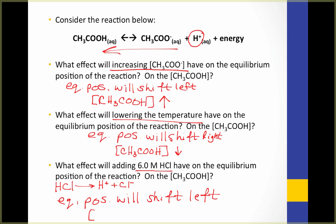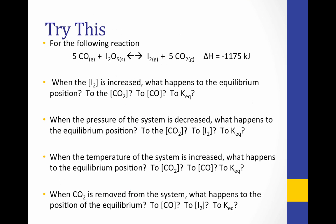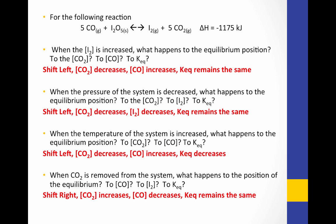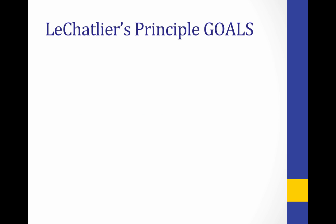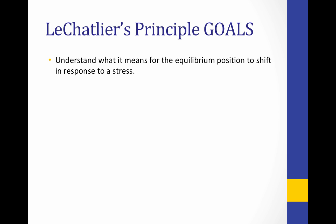Since the equilibrium position is shifting left, the concentration of CH₃COOH will increase because more of it is being produced. Here's one to try on your own — pause the video and try to answer these questions. When you come back, I'll reveal the answers. That brings us to the end of this video. We looked at what it means for an equilibrium position to shift in response to a stress, either increasing reactant and decreasing product, or increasing product and decreasing reactant. We looked at how to predict the direction of the shift for concentration, temperature, and pressure changes, and how to predict the effects on reactant and product concentrations.